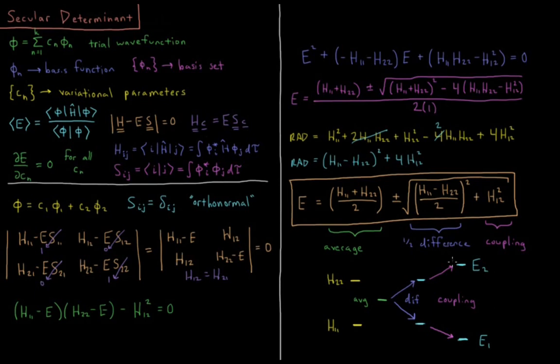In the case of an orthonormal basis set for the linear variational method, for a 2x2 matrix anyway, in the absence of coupling, the energies are just the energies of the individual basis functions. But it takes coupling to give us states which have an energy which is different than our trial basis functions that we start with.